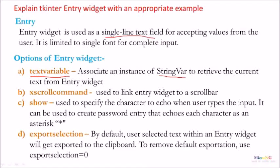exportselection - By default, user-selected text within an Entry widget will get exported to the clipboard. To remove the default exportation, use exportselection=0. So if you make exportselection equal to 0, the selected content from the Entry widget will not get copied into the clipboard by default.